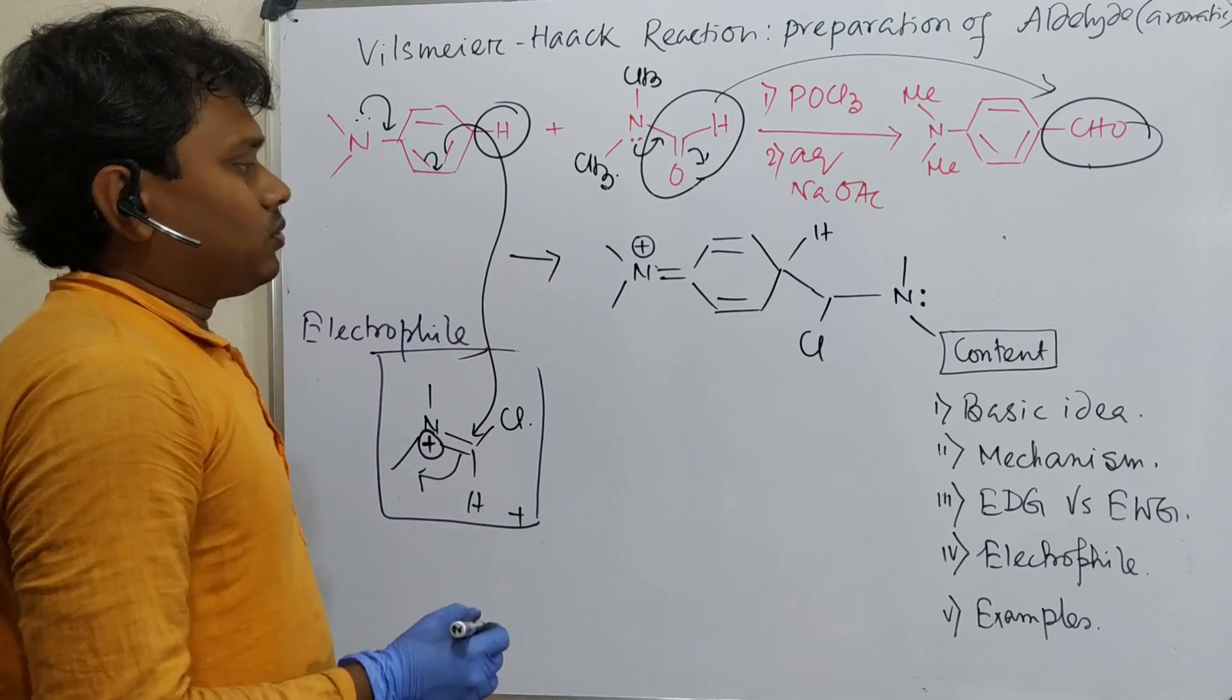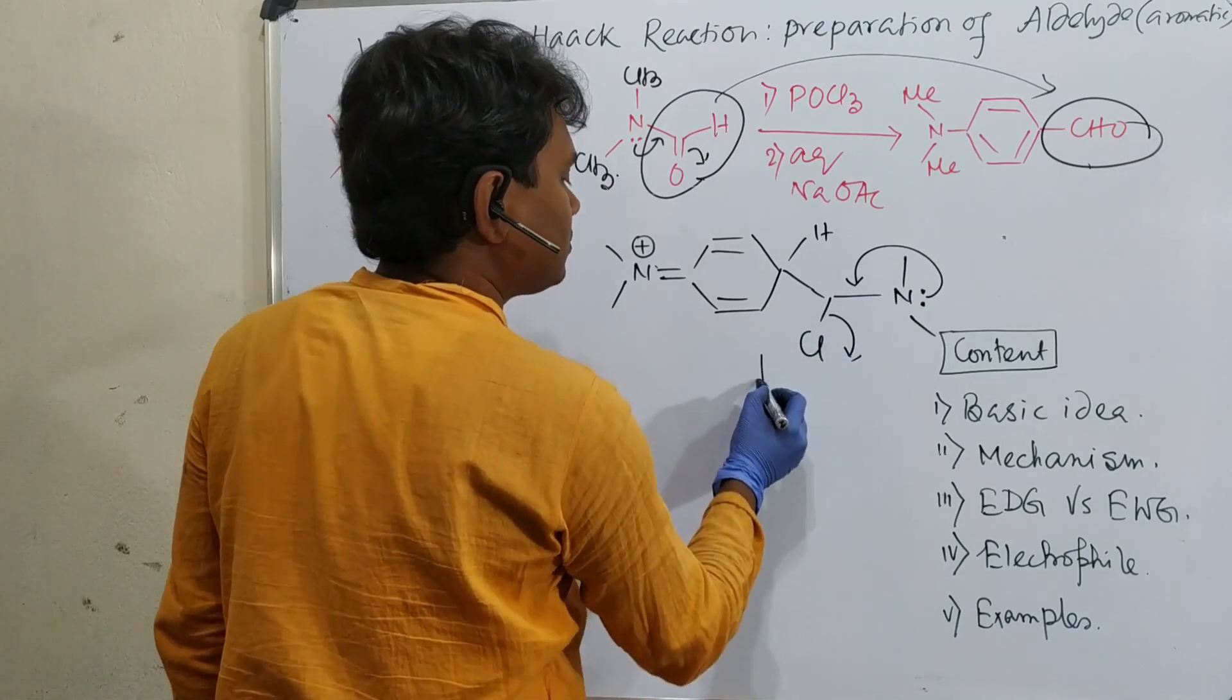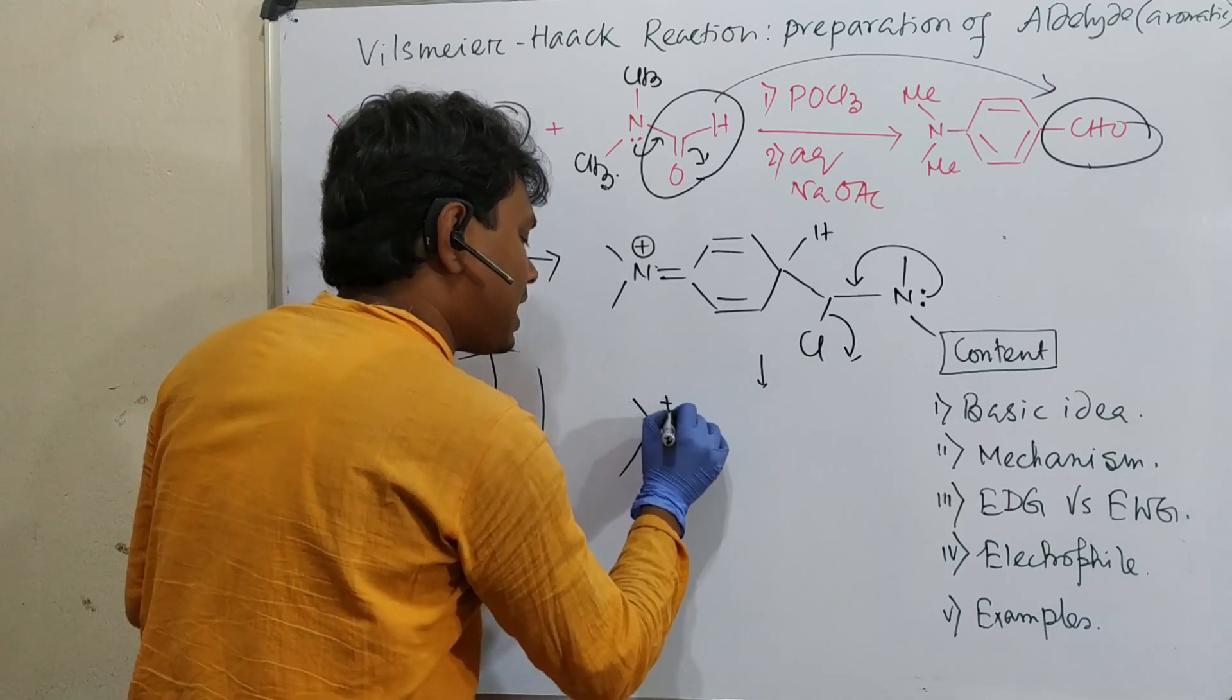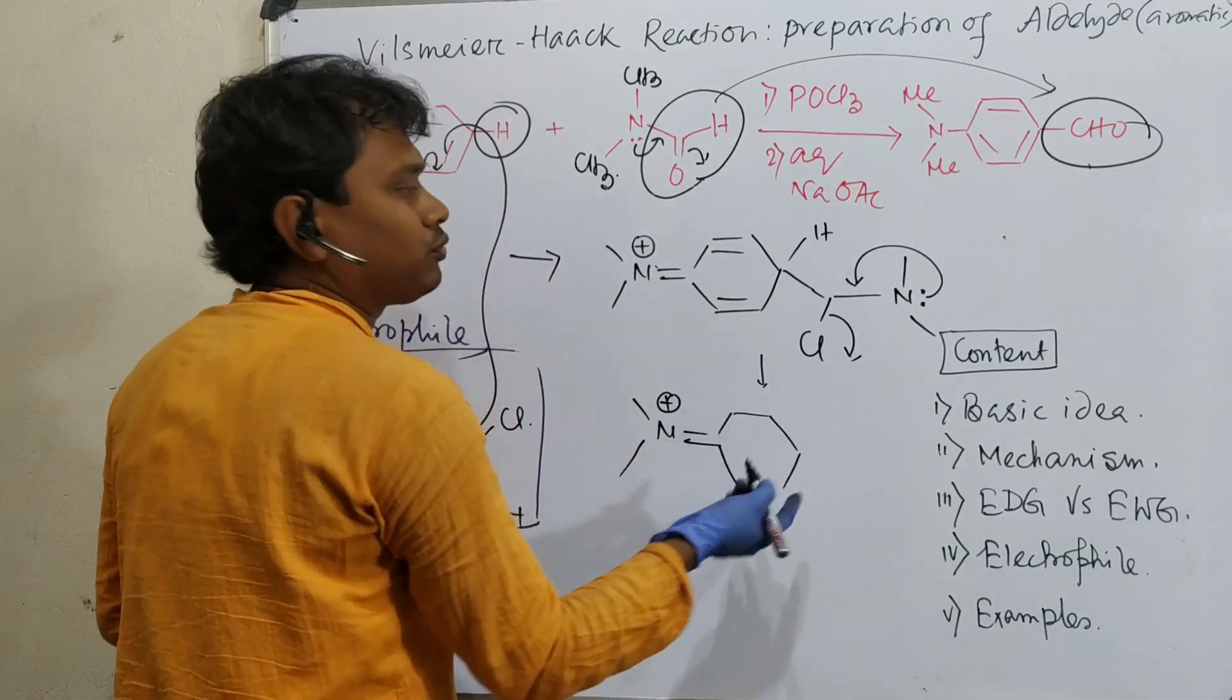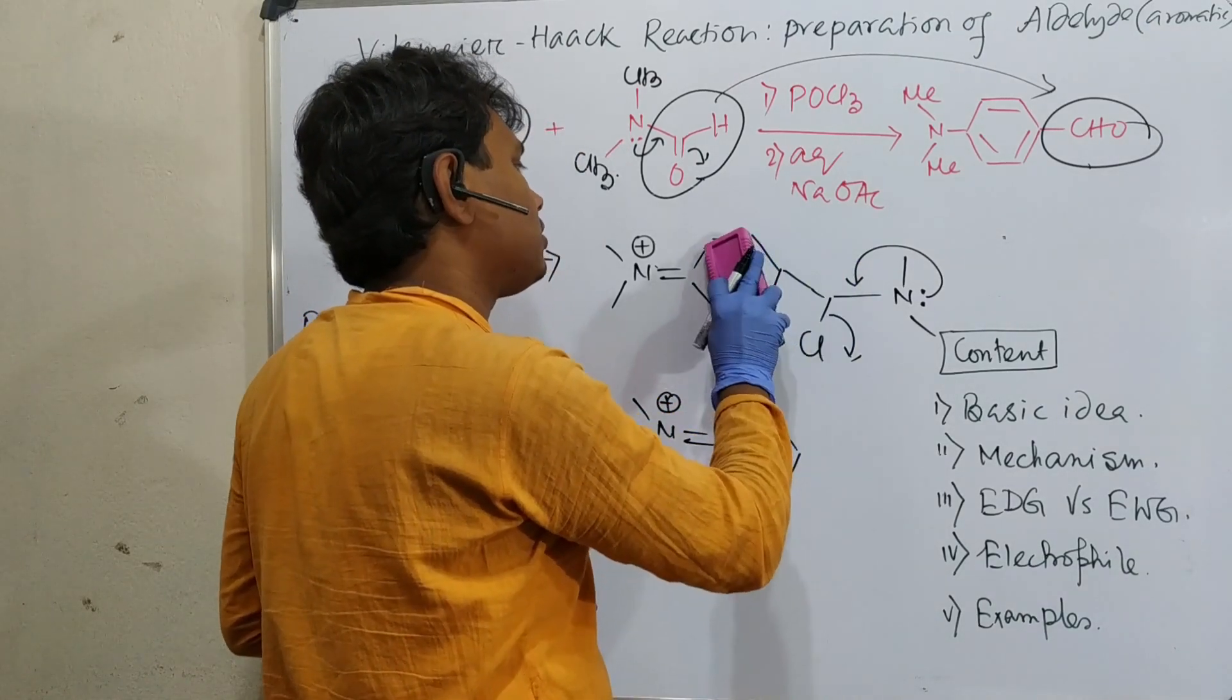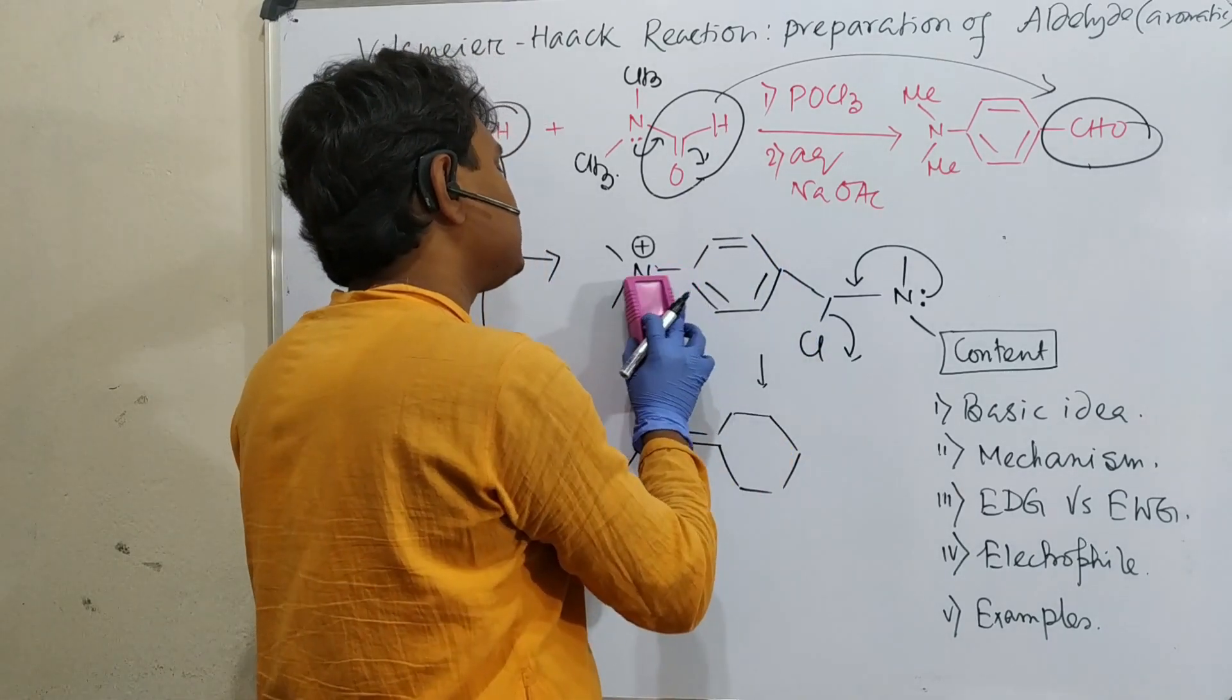What can happen? These electrons can push and Cl can leave. You may think aromaticity will be regained. Whatever happens, aromaticity will be achieved first because it gives lots of stabilization. Aromaticity is achieved and nitrogen becomes neutral.